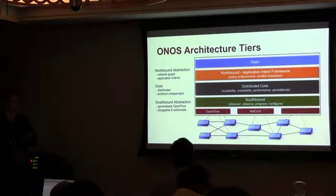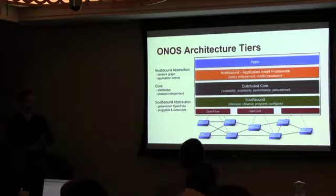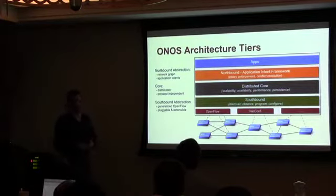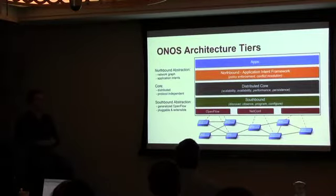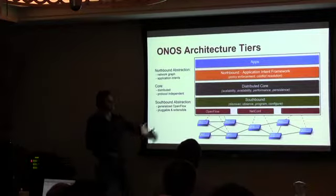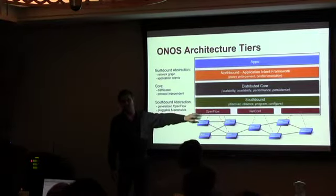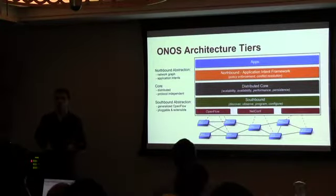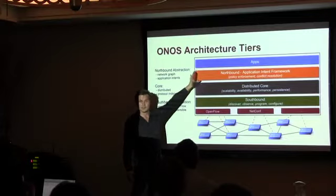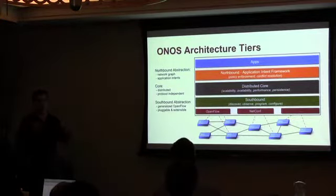At the heart of ONOS is the distributed core, which is responsible for providing scalability, keeping data safe, serving it out to applications, accepting sensory information from the southbound, and distributing it among the cluster. At the south of the core is a boundary we refer to as our southbound API. That API serves as a barrier to prevent protocol specifics from entering the core — we do not want the core to be polluted with protocol specifics, which has happened to many controllers in the past.